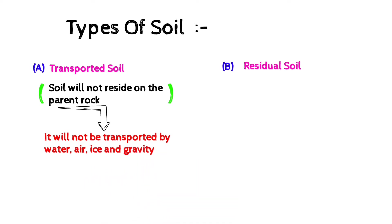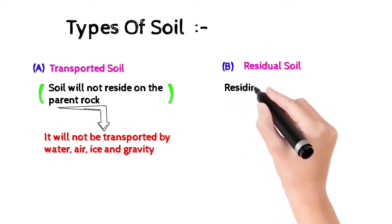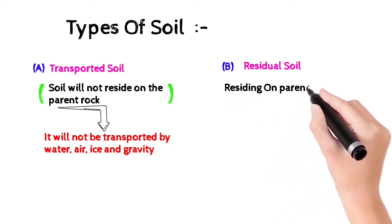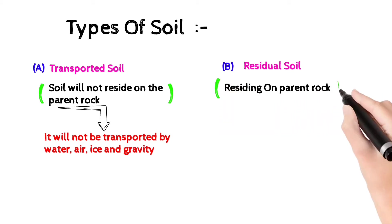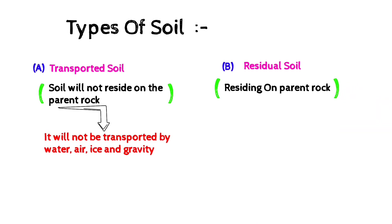The second type is residual soil, which is the soil that resides at the parent rock or at the rock. Now let's know elaborately about the types of transported soil.